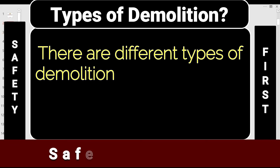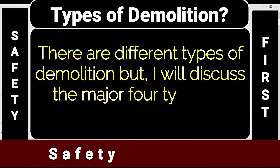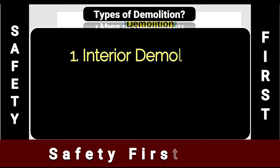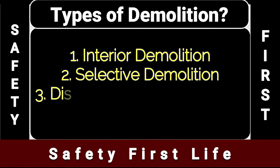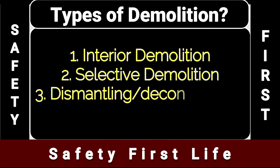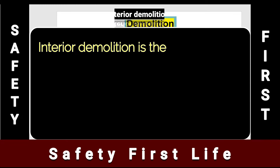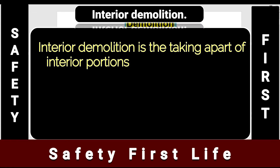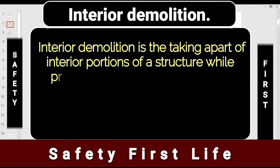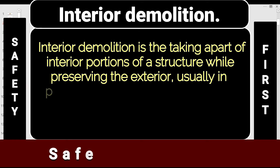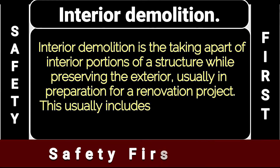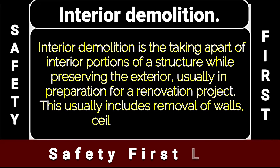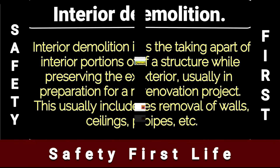There are different types of demolition. I'll discuss the four major types: number one, interior demolition; number two, selective demolition; number three, dismantling or deconstruction; and number four, total demolition. Interior demolition is the taking apart of interior portions of a structure while preserving the exterior, usually in preparation for a renovation project. This usually includes removal of walls, ceilings, pipes, etc.